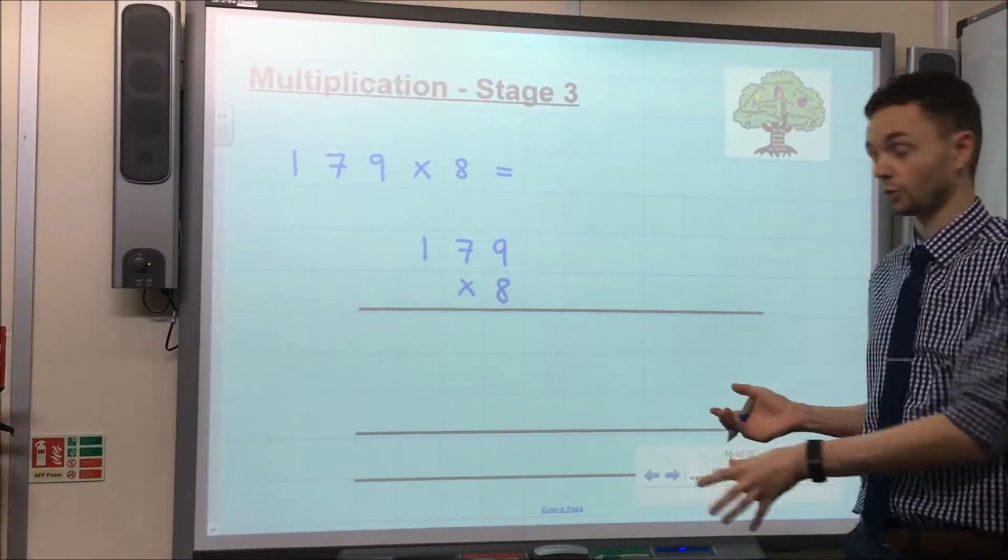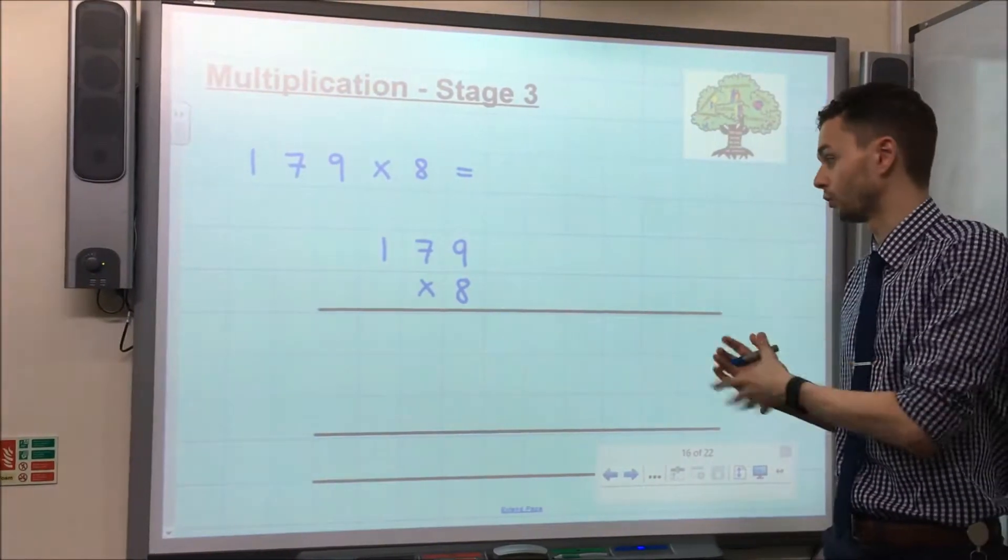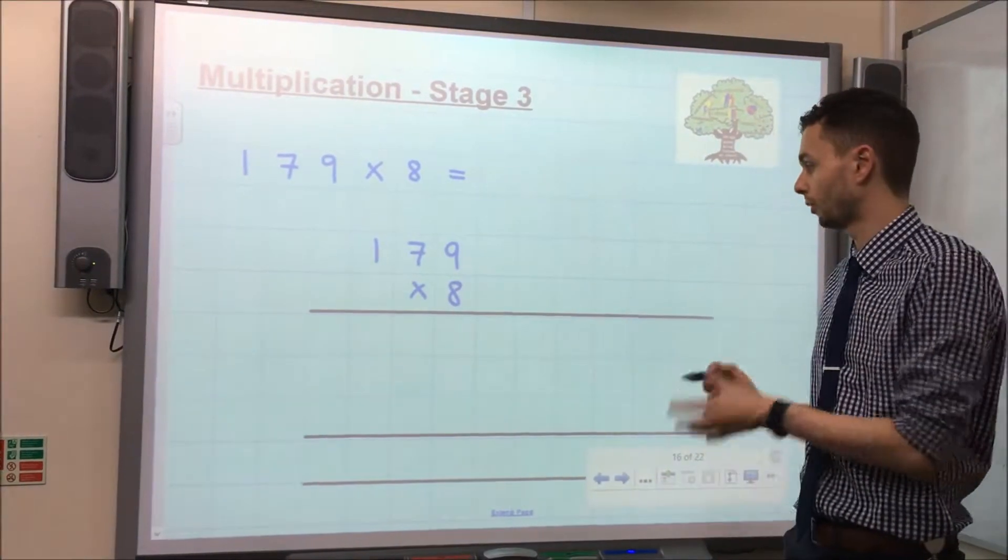So I've set the calculation out already so we can jump straight in and have a look at how it works. So we've got 179 multiplied by 8.